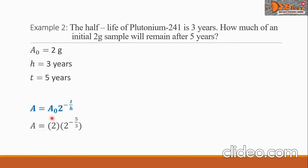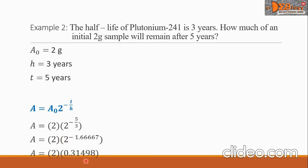A equals A-sub-zero, which is 2, times the constant 2 raised to negative T over H — that is negative 5 divided by 3. Simplifying, negative 5 over 3 equals negative 1.66667. Then 2 raised to negative 1.66667 equals 0.31498. Multiplying by 2, we get 0.63. This is the amount of plutonium-241 remaining.